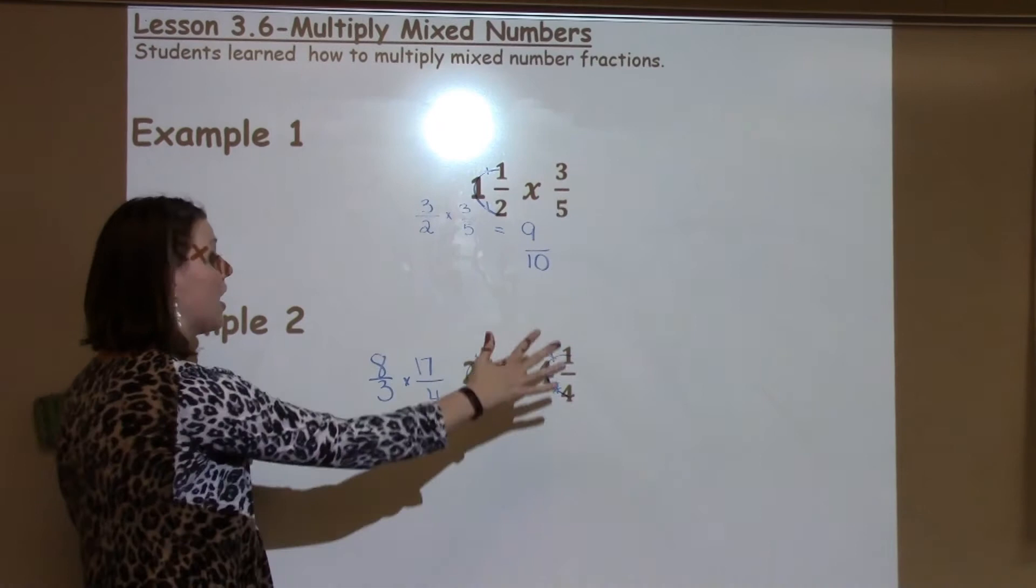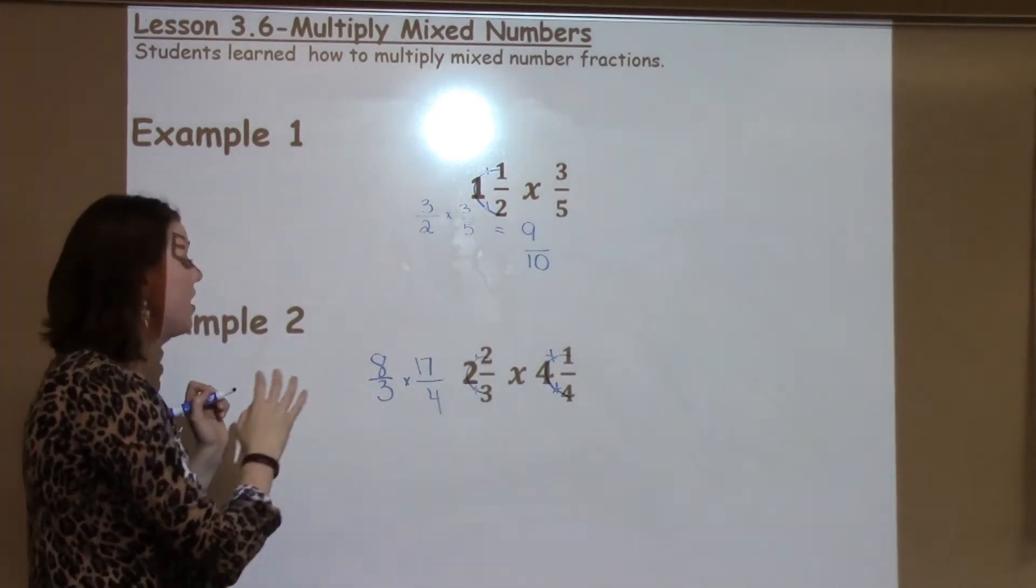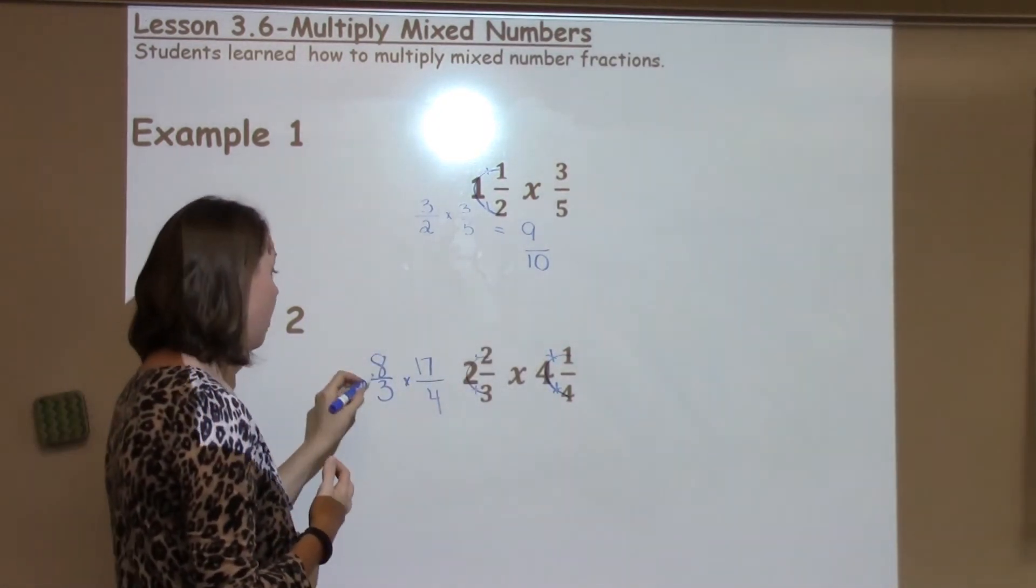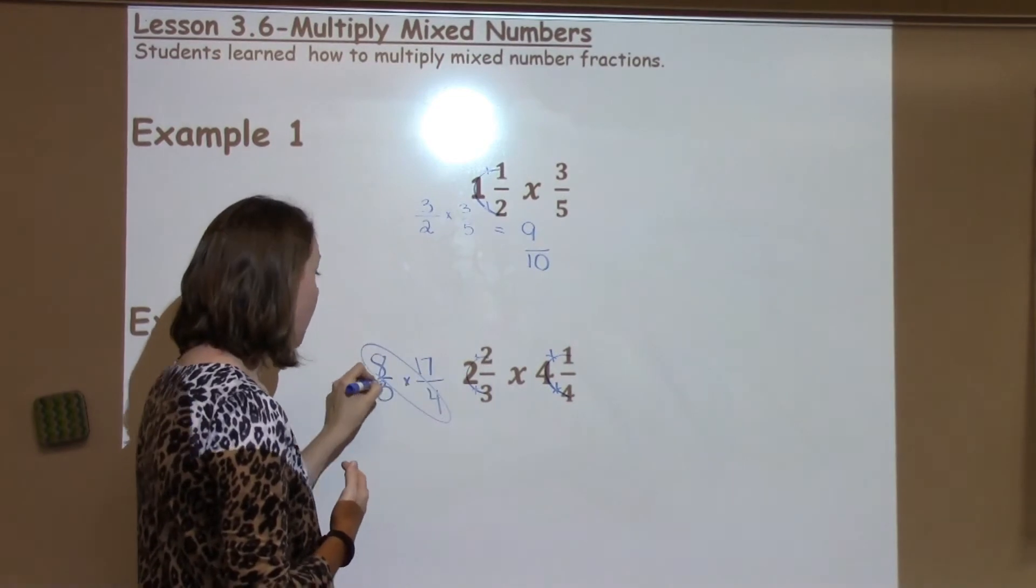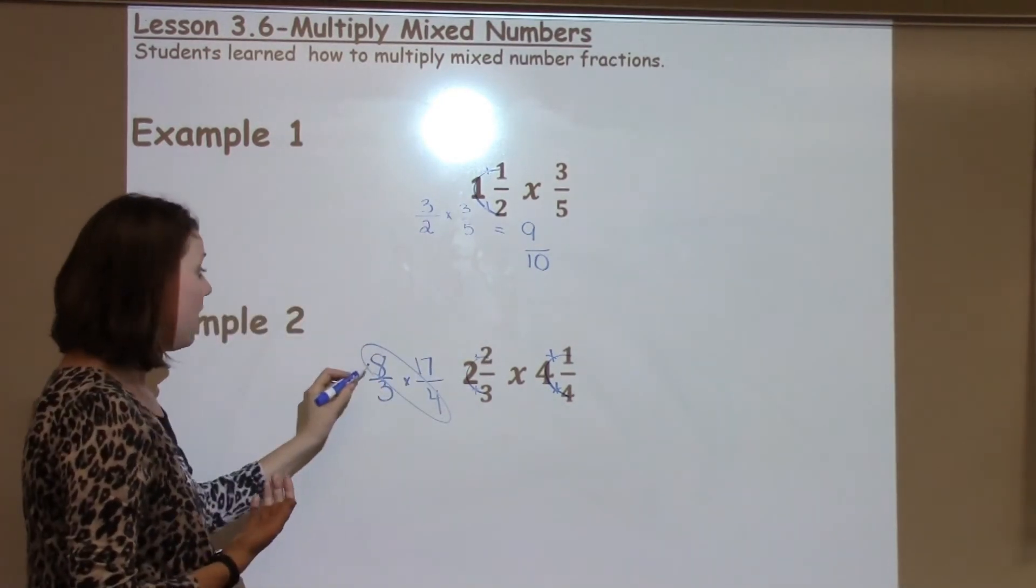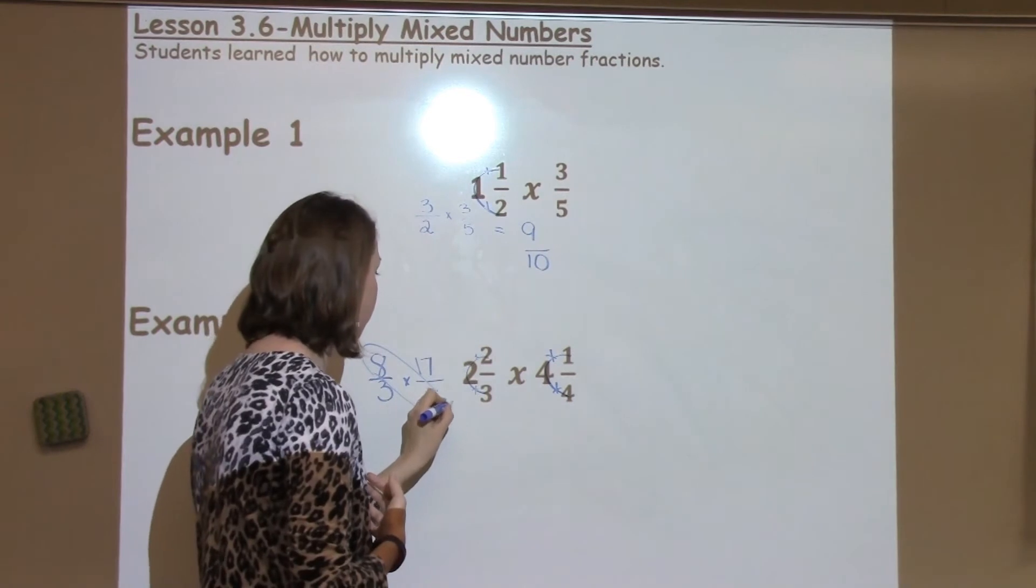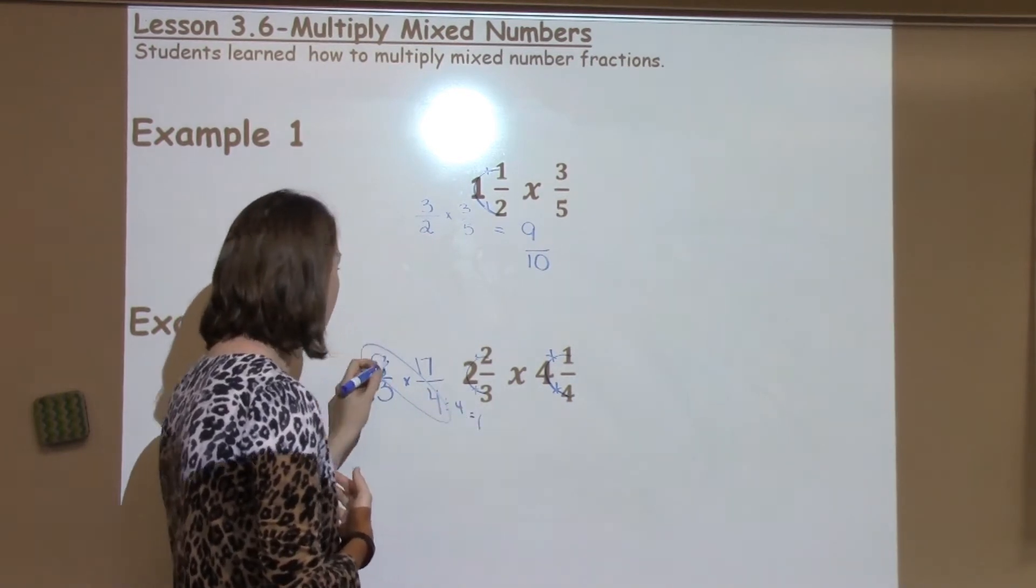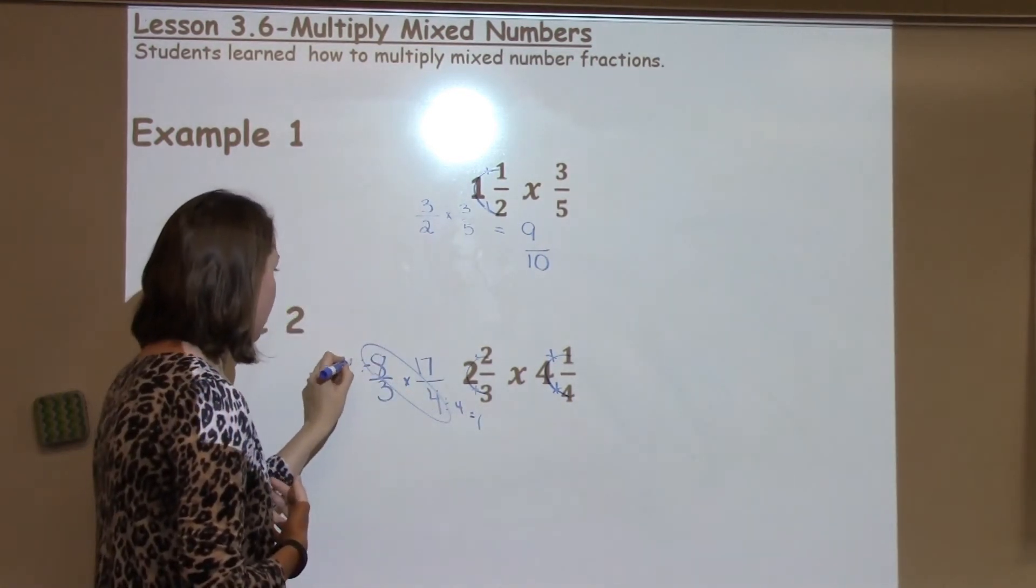Now I need to go ahead and multiply. Now a few fifth graders might see that we can cross-simplify here. If they wanted to, that's great. 8 and 4 both share 4s, so I could do 4 divided by 4 is 1. 8 divided by 4 is 2.